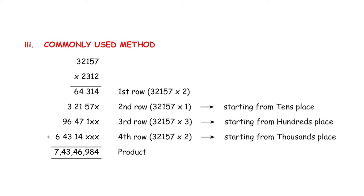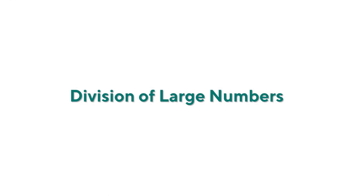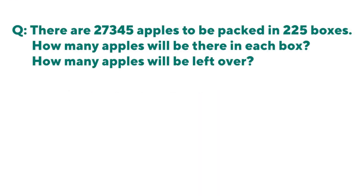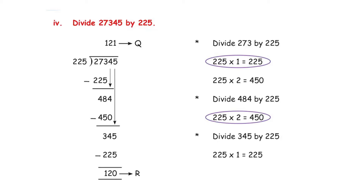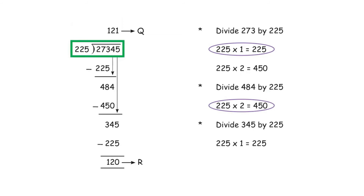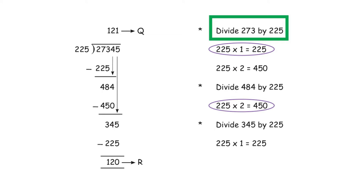This method is commonly used when multiplying large numbers. Now let's look at division. There are 27,345 apples to be packed in 225 boxes. How many apples will be in each box, and how many apples will be left over? Let's divide the apples into the boxes: 27,345 ÷ 225.